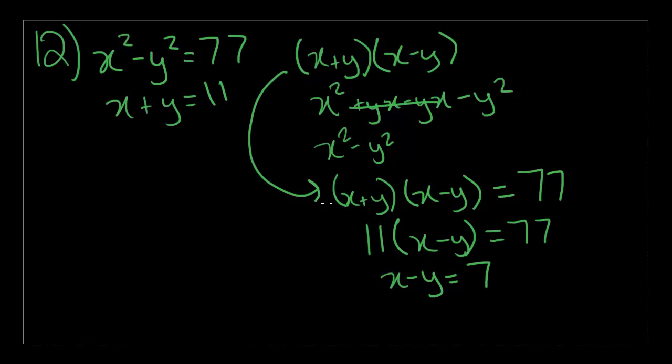Now, we have these two simple equations. x plus y equals 11, and x minus y equals 7. We can use the addition-subtraction method to solve this problem. x plus x is 2x, y plus negative y is nothing, 2x is equal to 11 plus 7, which is 18. Therefore, x is equal to 9, and that is the value of x.